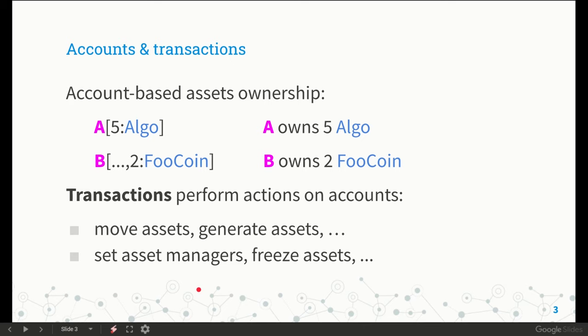Besides the native asset, called Algo, users can create custom assets. For instance, with this notation I am representing a user A with an account holding five units of Algo, while here I have a user B with an account which also holds two units of this user-defined asset called FooCoin.